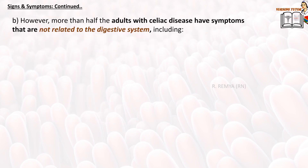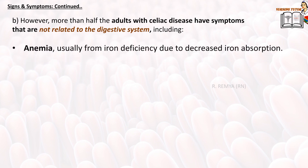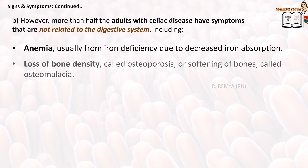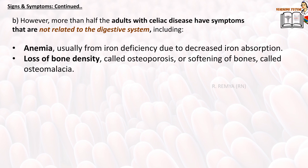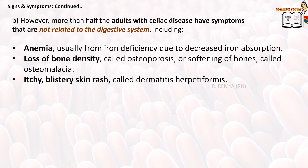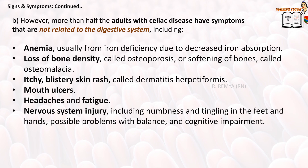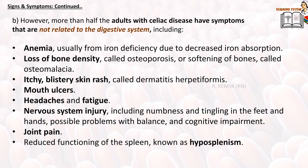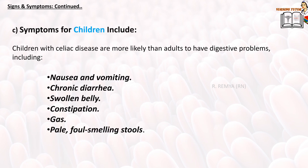More than half of adults with celiac disease have symptoms not related to the digestive system, including anemia — usually from iron deficiency due to decreased iron absorption — loss of bone density called osteoporosis or softening of bones called osteomalacia, itchy blistery skin rash called dermatitis herpetiformis, mouth ulcers, headache, fatigue, nervous system injury including numbness and tingling in the feet and hands, possible problems with balance and cognitive impairment, joint pain, and reduced functioning of the spleen (hyposplenism), as well as elevated liver enzymes.